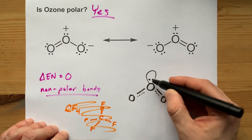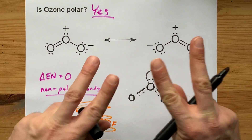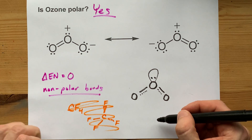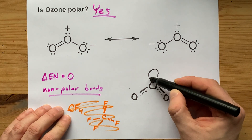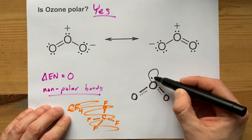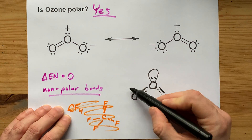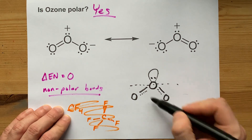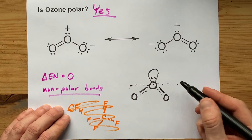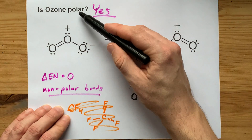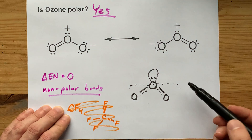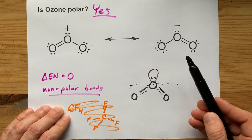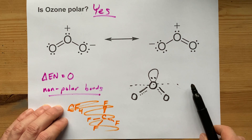But that lone pair has nothing to cancel it out on the other side. That extra lone pair on one side of the molecule — take a look at the asymmetric distribution of electrons — is what causes the molecule to be polar, even though the bonds that make it up are non-polar.